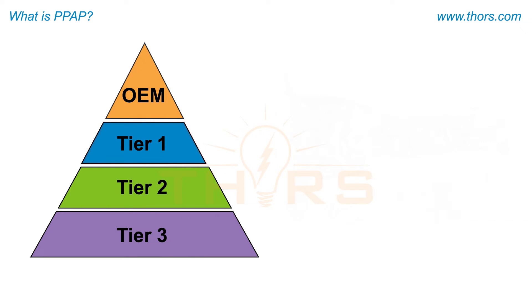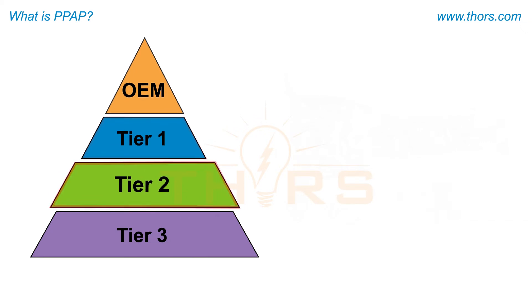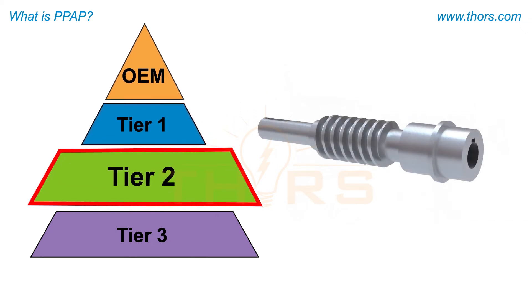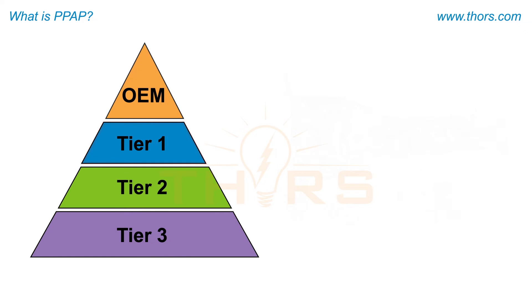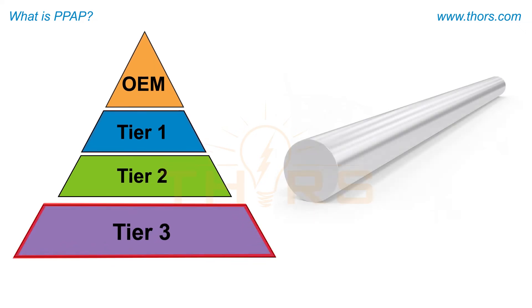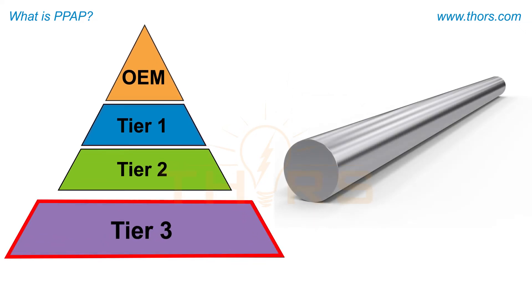The supplier manufacturing the individual gears used within the gearbox would be considered a Tier 2 supplier supplying to the Tier 1 organization. The supplier manufacturing the steel and the steel forging used to manufacture the individual gears would be considered a Tier 3 supplier supplying to the Tier 2 organization.